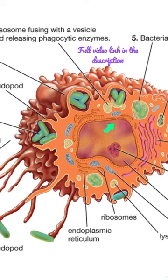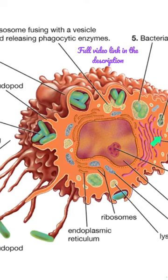The nucleus is euchromatic. They have granular and agranular endoplasmic reticulum, a Golgi complex, and mitochondria.